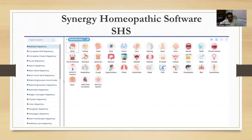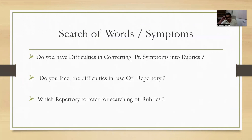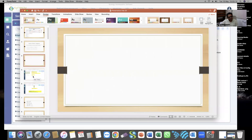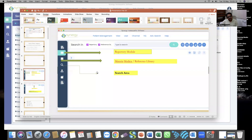Why is this software required? Most of the time in homeopathic practice we have difficulty converting patient symptoms into rubric form, or we are confused with so many repertories and materia medicas available. Which repertory to refer when the patient is in front of us? How to do rubric selection — physical symptoms, mind symptoms, characteristic symptoms, general symptoms? That's why we require this tool. Synergy Homeopathic Software is very reliable and practitioners all over the world use it.